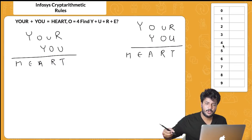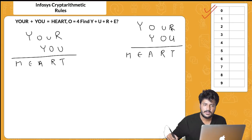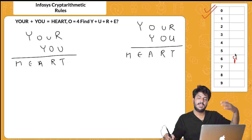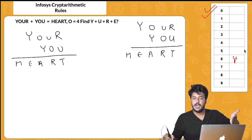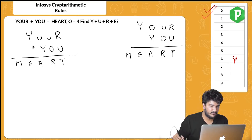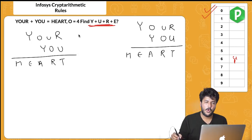For more complicated problems, draw a tracking table so you can log each found value and track which digits are still unoccupied. Now let's look at the next problem: YOUR + U = HEART. The value of O is already given as 4. As always, start from the leftmost column.